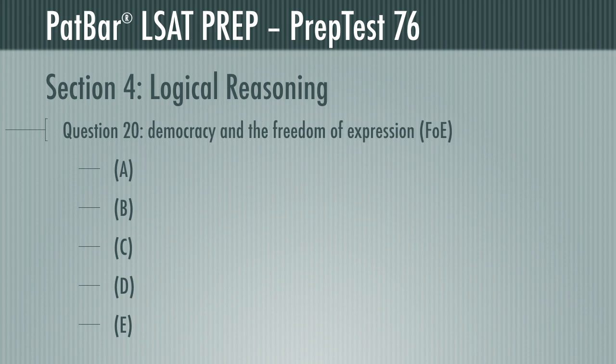Question 20 offers as fact that the public square of olden days was used as a tool of democracy, since it allowed disparate opinions to be aired at a single gathering. It also presents as fact that the Internet gives anyone with access the opportunity to discuss these issues with millions of other people, allowing the Internet to play the same role as the public square. The conclusion is that Internet users must be given at least as much freedom of expression as participants in the public square, and one of the answers to follow is required by that conclusion.